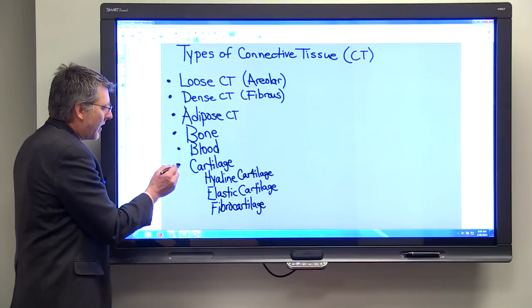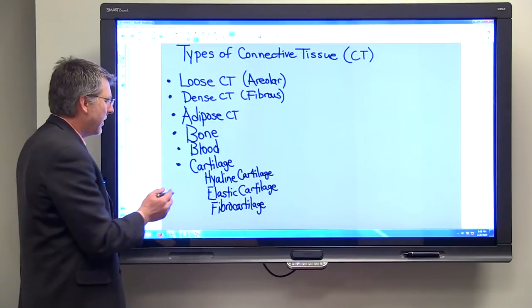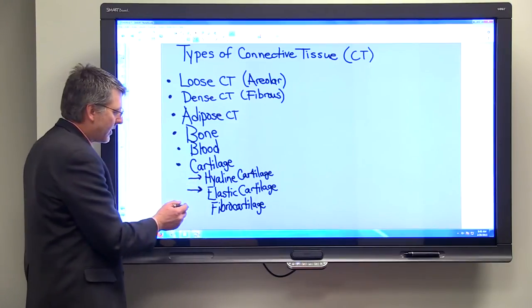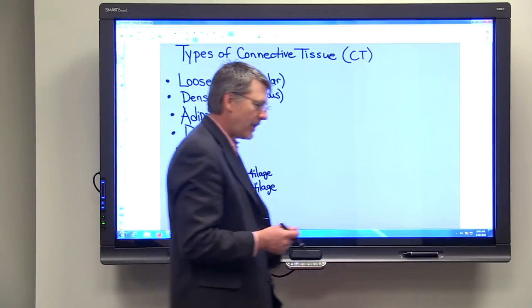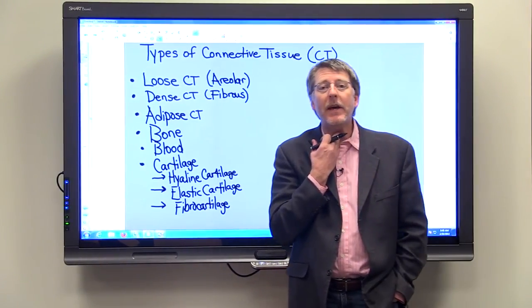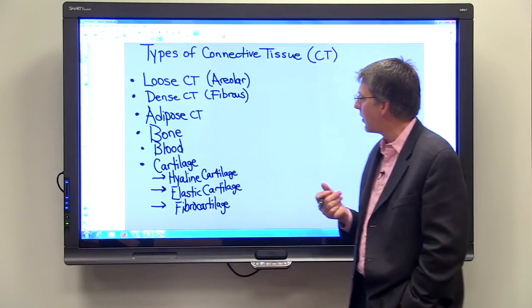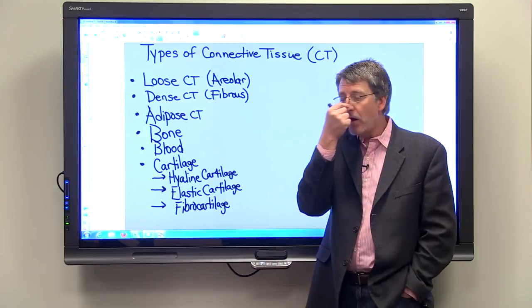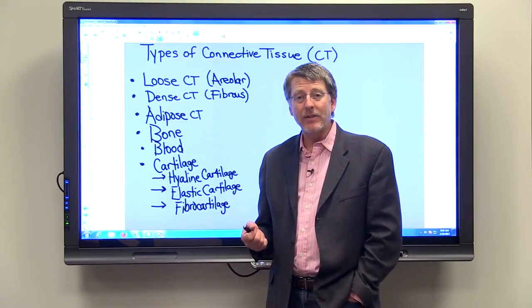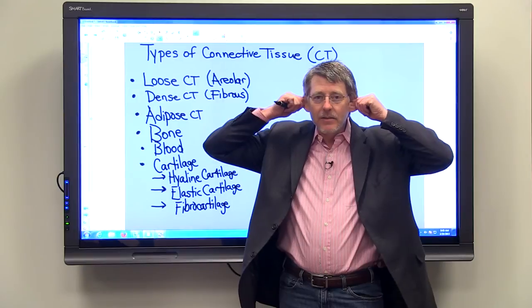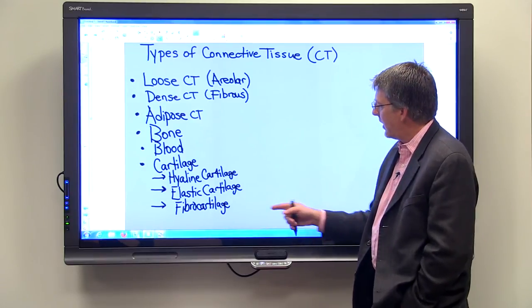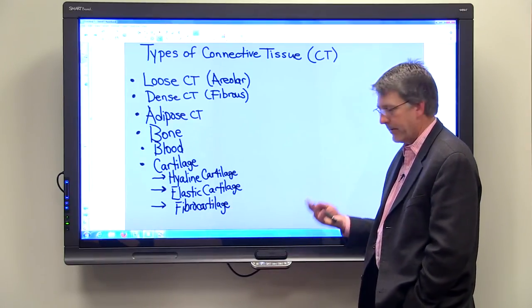We also have cartilage, and there are three different kinds you need to know about. One is hyaline cartilage, then there's elastic cartilage, and one called fibrocartilage. Hyaline cartilage is very common — it's found in your trachea; if you palpate your throat you can feel the rings in your trachea or windpipe. It's also found at the end of your nose. Elastic cartilage is just what it sounds like — it can stretch and has a lot of elastic fibers. If you pull on your ears and let go they spring back, and your ears contain elastic cartilage.